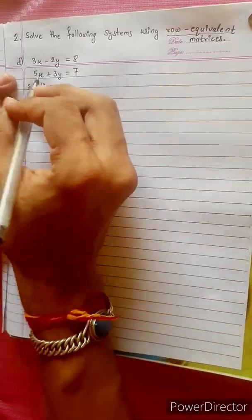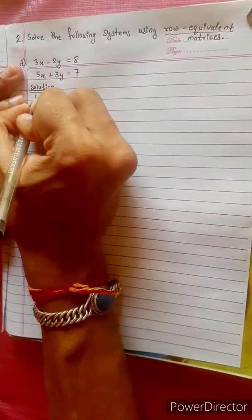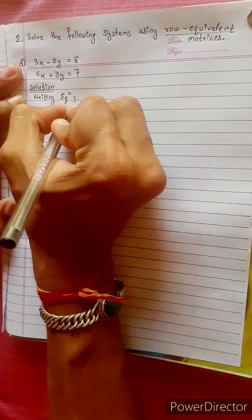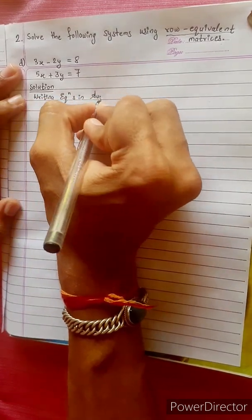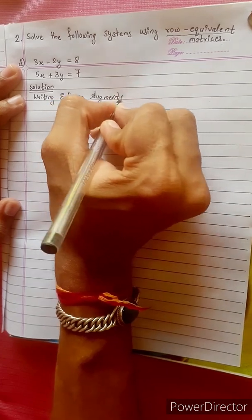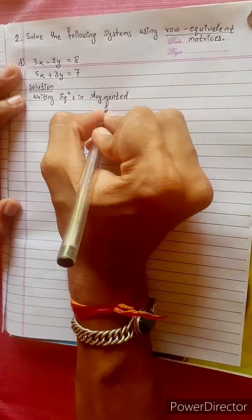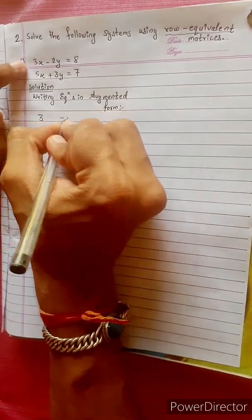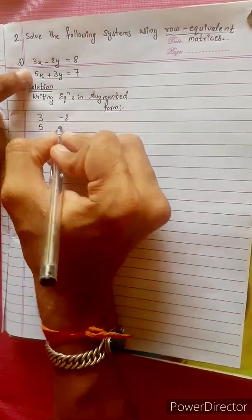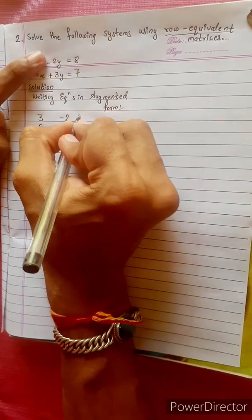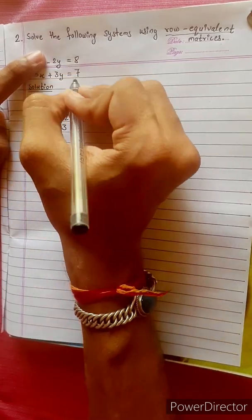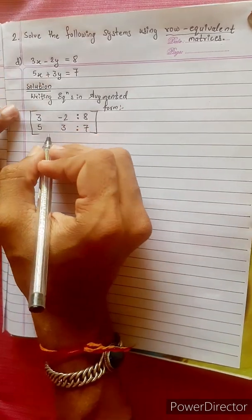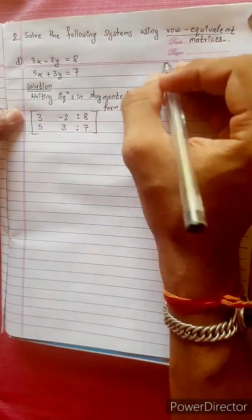Row Equivalent Matrix Method. It's like writing the equations in augmented form. Here is coefficient 3, here is minus 2, here is 5, here is equal to, here is 2, here is 8 plus 7. This is augmented form.